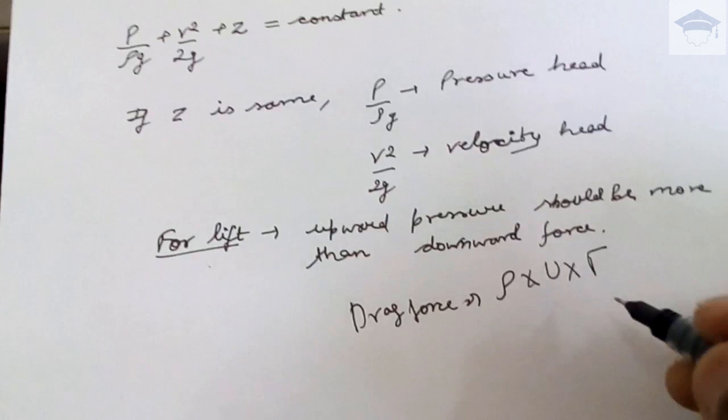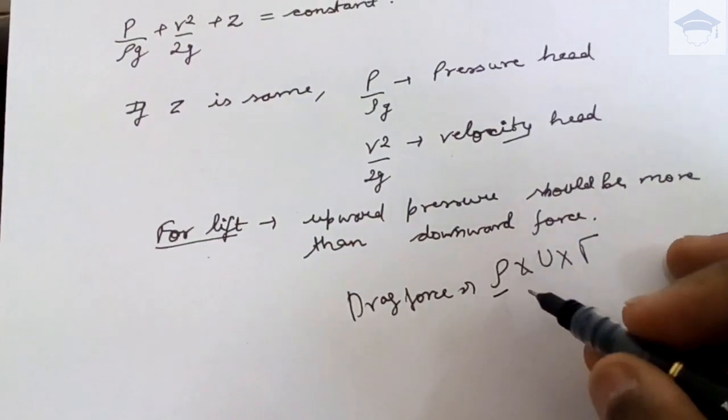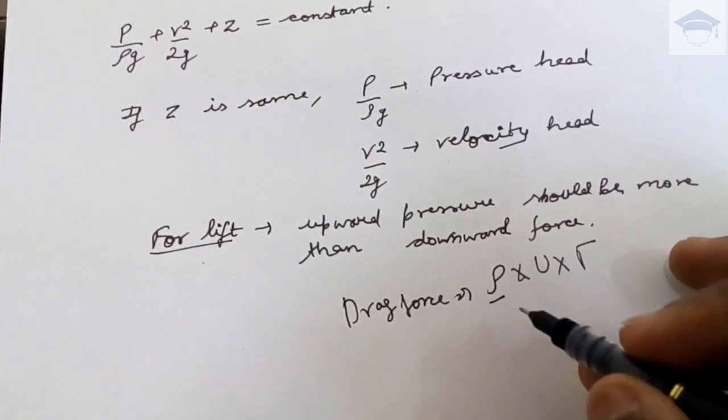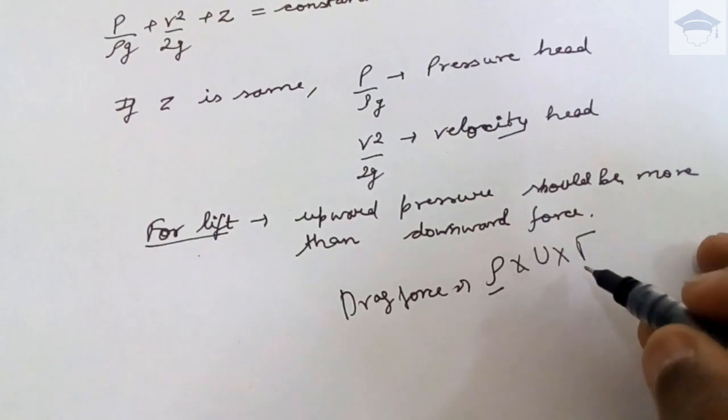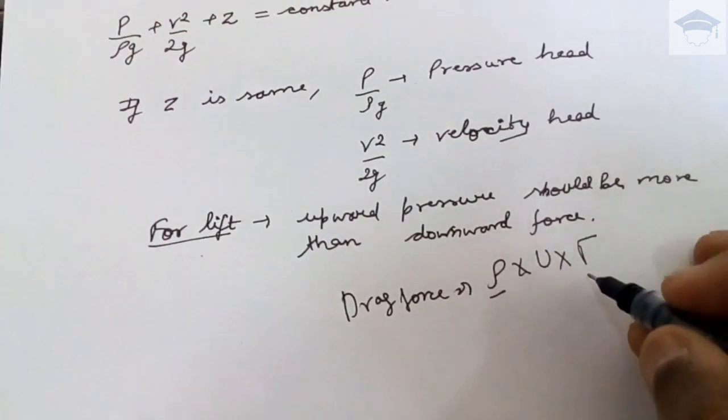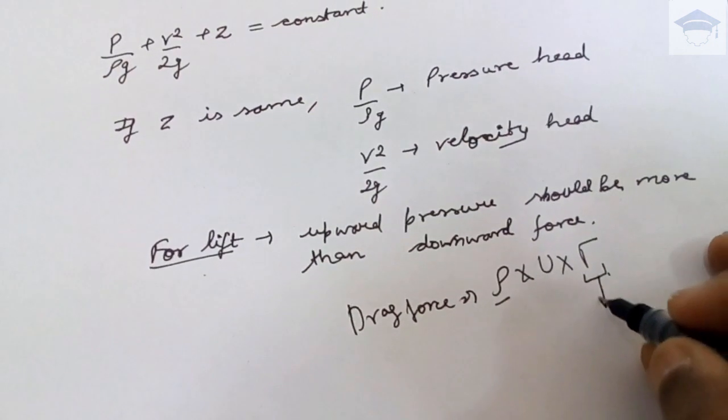And ρ is the, and gamma is the circulation, that is vorticity into area, and it is given as the line integral of the velocity v dot ds.